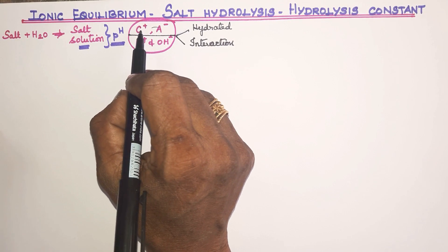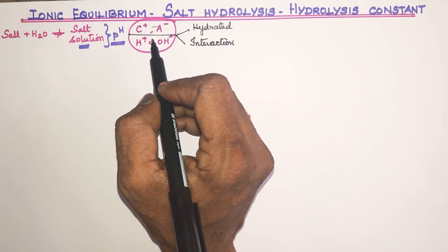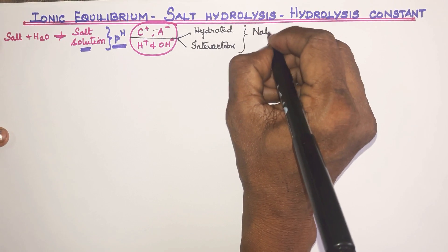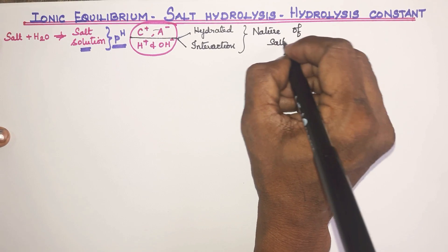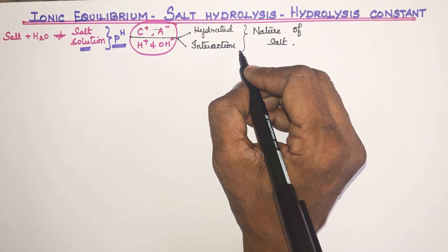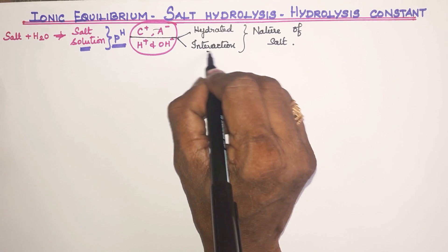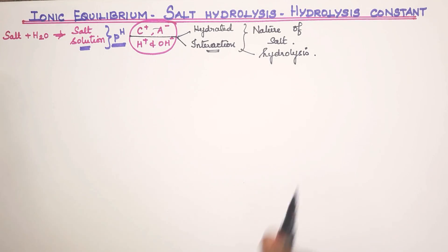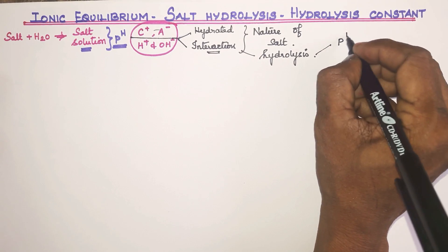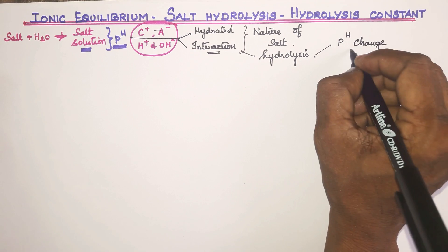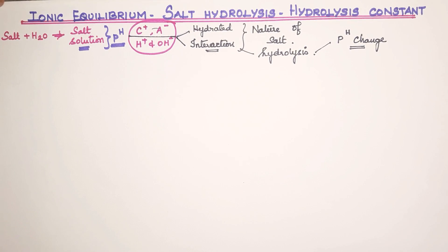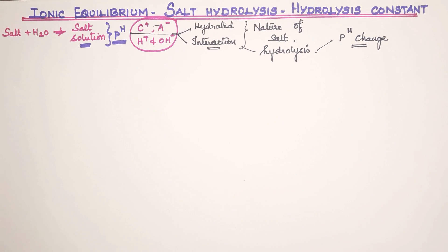Whether the ions interact or just get hydrated determines whether there is a change in pH. This change depends on the nature of the salt. Hydrolysis may change depending upon the nature of the salt. How do we know the nature of the salt? We need to know how the salt is formed — that is basic knowledge.